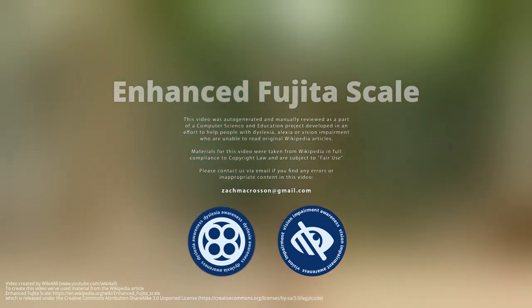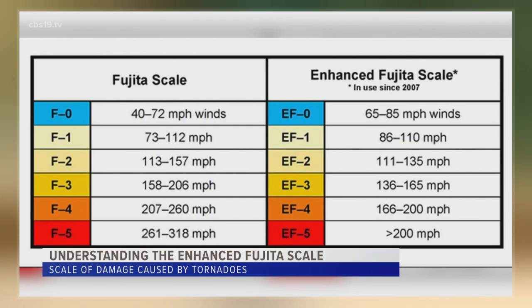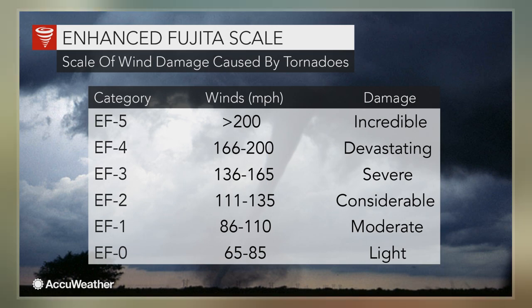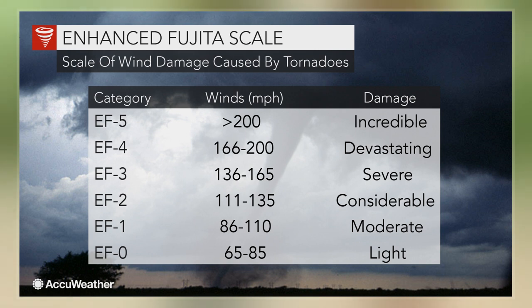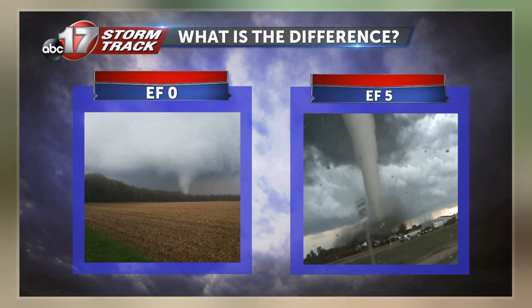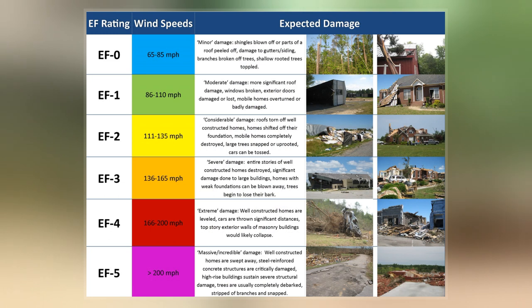The Enhanced Fujita Scale rates the intensity of tornadoes in some countries, including the United States and Canada, based on the severity of the damage they cause. The Enhanced Fujita Scale replaced the decommissioned Fujita Scale that was introduced in 1971 by Ted Fujita. Operational use began in the United States on February 1, 2007, followed by Canada on April 1, 2013.